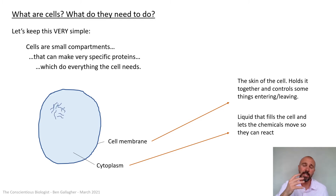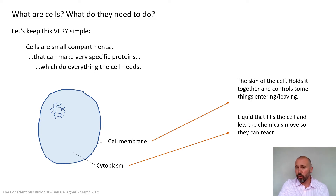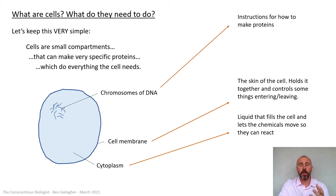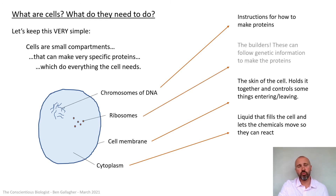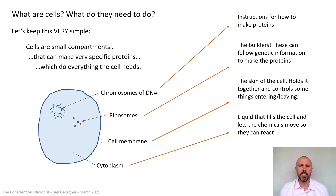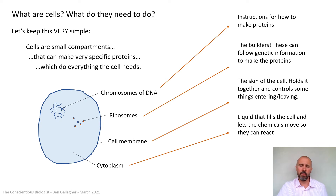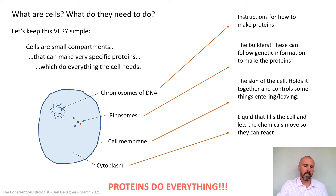If you're going to make proteins, you need two other things. You need the instructions for how to make those proteins — these are chromosomes, made of DNA. I like to label them as chromosomes of DNA because DNA is the chemical they're made of, and they're the instructions for how to make proteins. But there must also be something in the cell that can read those instructions — those are ribosomes. Ribosomes can follow genetic information indirectly using a messenger molecule, build the proteins, and once the proteins are made, they'll keep everything working in the cell. Proteins do everything.